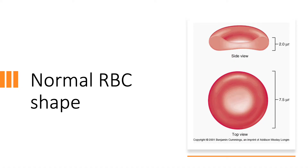Let's first revisit the normal shape of the RBC. Taking a look at the figure here, you can see that from the top, the RBC might seem like a perfect circle or sphere with a bit of discoloration in the center. But when we look at the RBC from the side, you can see that it is actually a flattened sphere, similar to a donut in shape. In fact, the central pallor that we first see in the top view is actually caused by an indentation in the RBC shape.